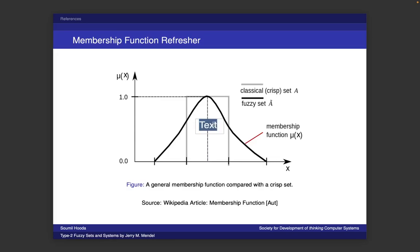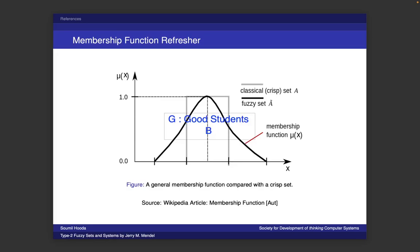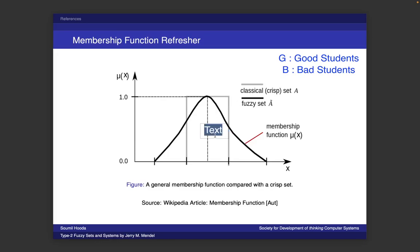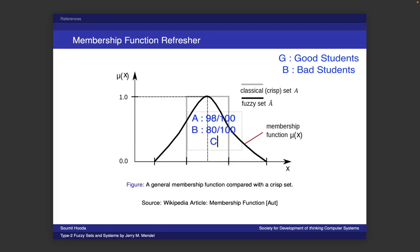Let's think about students. Let's form a set called G — a set of all good students in a class — and a set called B for all the bad students. Our metric for determining good and bad students would be their marks. Let's create some students: student A scored 98 marks out of 100, student B scored 80 marks out of 100, student C scored 60 marks out of 100, and student D only scored 35 marks out of 100.